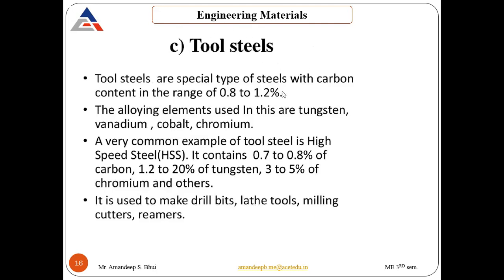The third type of steel is tool steel. Tool steels are special types of steels with carbon content ranging between 0.8 to 1.2%. The alloying elements used are tungsten, vanadium, cobalt and chromium. A common example is high speed steel, which contains 0.7 to 0.8% carbon, 12 to 20% tungsten, 3 to 5% chromium, and other materials in smaller quantities. Tool steel is used to make drill bits, lathe tools, milling cutters and reamers.